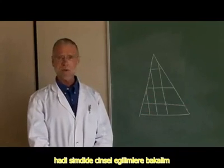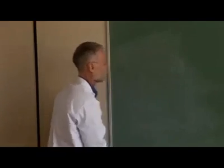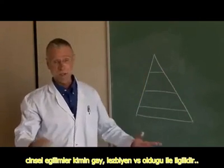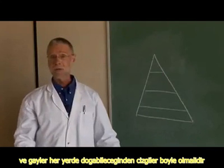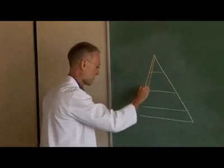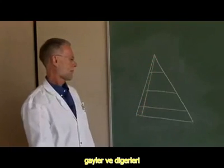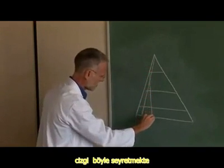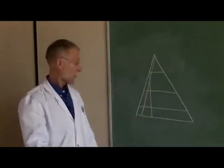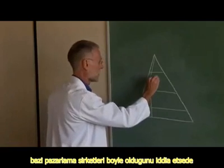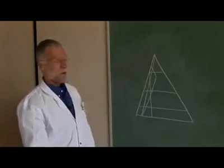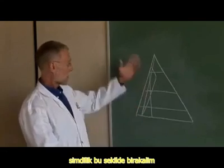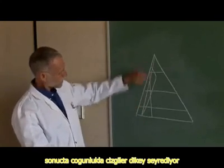Let's look at sexual orientation — whether you're gay, straight, bi, or lesbian. Since gay people are born everywhere, it should look like this: gay people and straight people distributed evenly. But since gay people are discriminated against, maybe it looks more like this. Some marketing companies seem to think it looks more like this. Since gay people aren't really counted in the census, we don't know — so in deference to queer theory, let's just leave this messy. Anyway, the lines are mostly vertical.